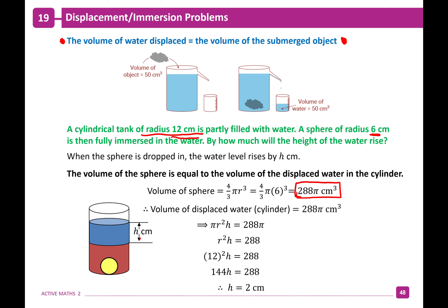In these questions: state that the volume of the object immersed equals the volume of the displaced water, solve for the volume of your shape, substitute into your formula, and solve for your unknown dimension.